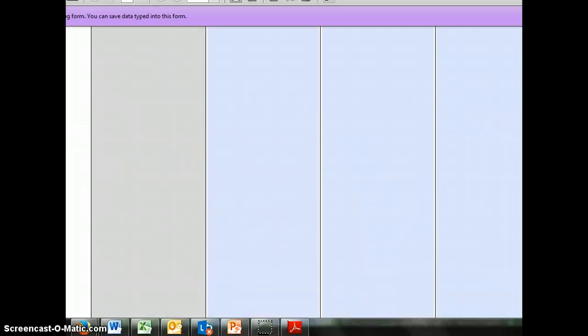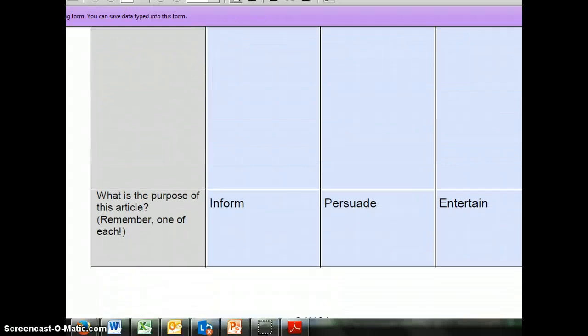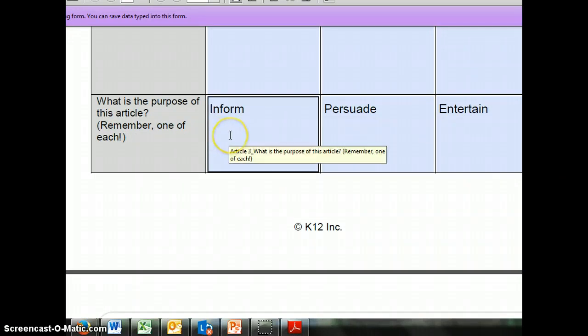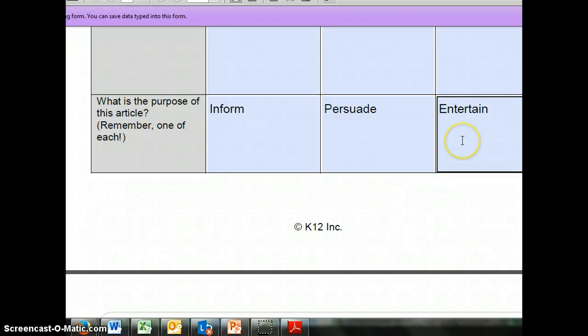So hopefully that helps make this graphic organizer a little more clear. Again you're going to want to find three articles. You're going to put your source here and in this box where it says what is your purpose you want inform, persuade and entertain. And then the very last box you want to give me two reasons why this is an article that informs me, why this is an article that persuades me, and why this is an article that entertains me. As always then you're going to want to save it and upload it to the dropbox. So I hope that helps. If you have any questions let me know and otherwise have a great day.